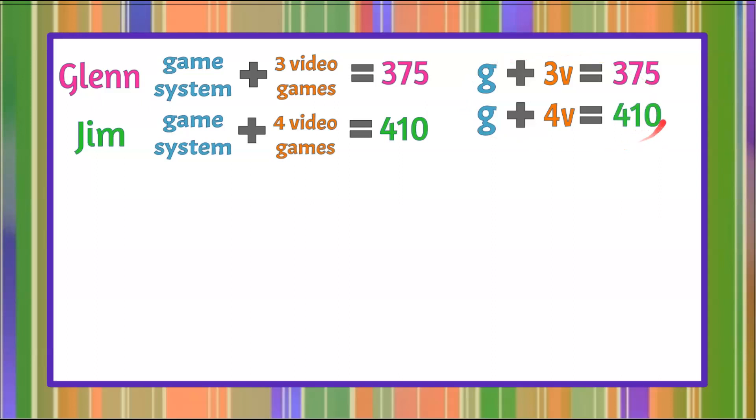Here is my system of linear equations. Seeing as the variable g has the same coefficient, I'm going to subtract one equation from the other. If I subtract these terms, I must also do the same and subtract these like terms as well. So g subtract g is zero, a zero pair. 3v subtract 4v is negative 1v, or negative v. And 375 subtract 410 is negative 35.